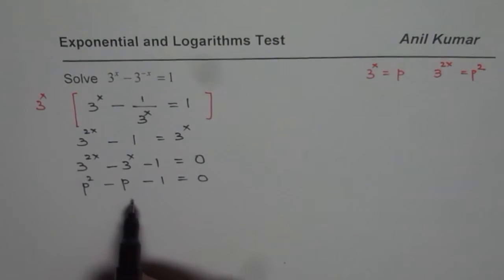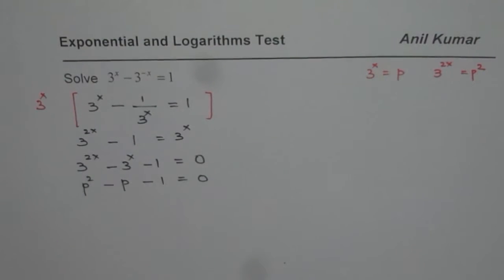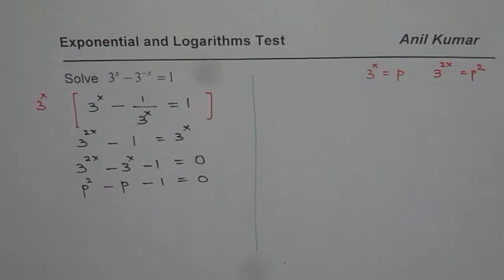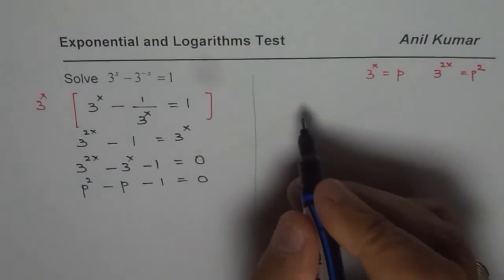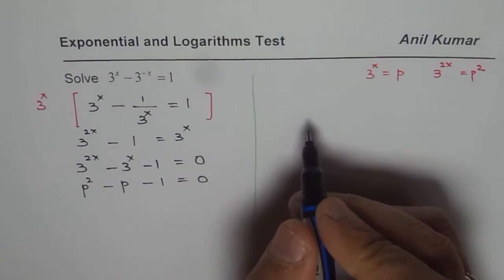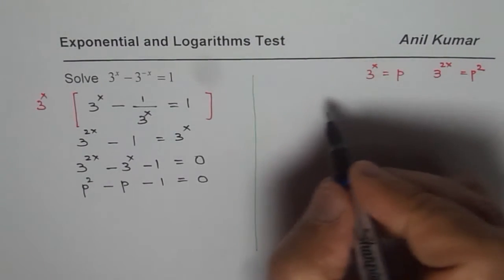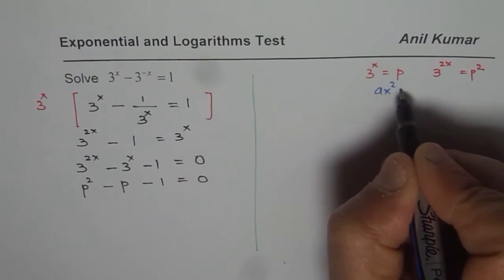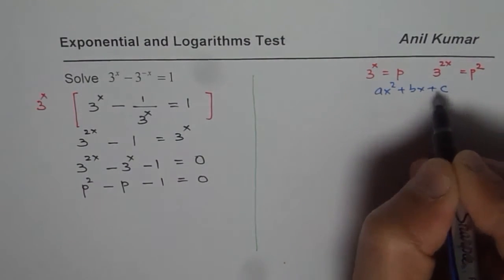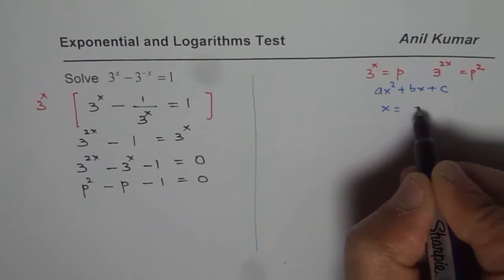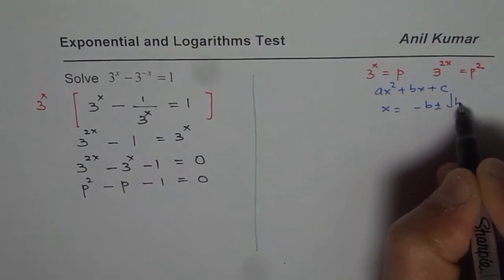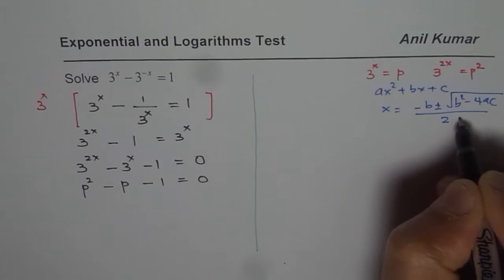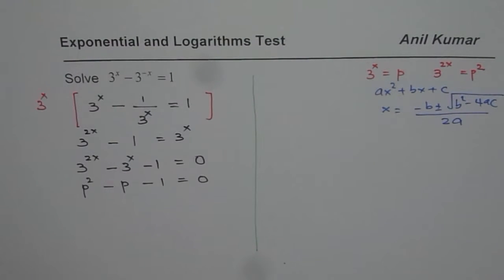Now to solve this we can apply the quadratic formula. If the equation is ax squared plus bx plus c, then x equals to minus b plus or minus square root of b squared minus 4ac, over 2a. That is the formula which we are going to apply.